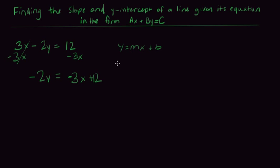Okay, so now I want to get y all by itself. So I'm going to divide by negative 2 because right now y is multiplied by negative 2. So I'm going to divide by negative 2 and I'm going to have to do that to everything in this whole equation.